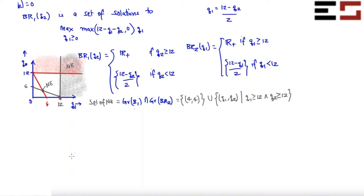Let us do another problem. What I'm going to do is introduce some discontinuity in the profit function. I'll do that by including costs that are discontinuous, in the sense that there is a fixed cost component to the cost function which is not sunk.